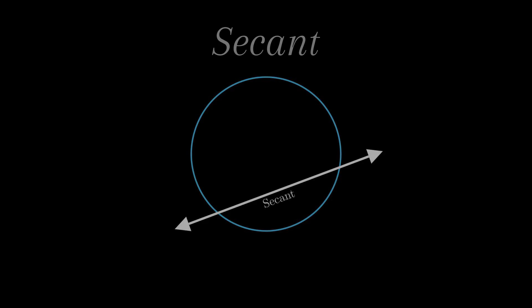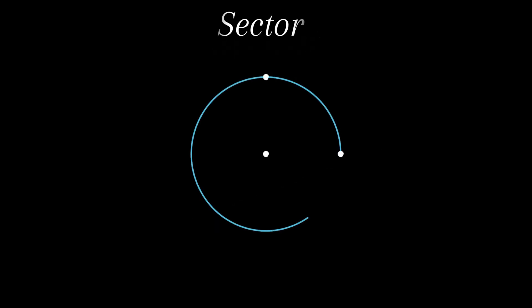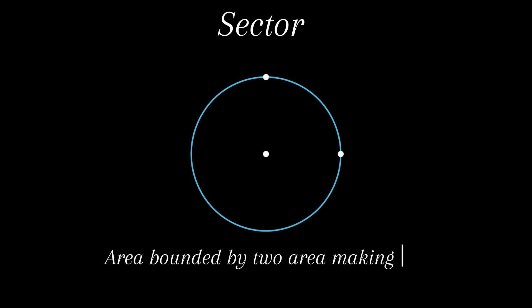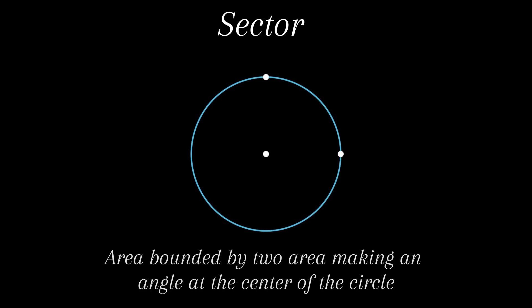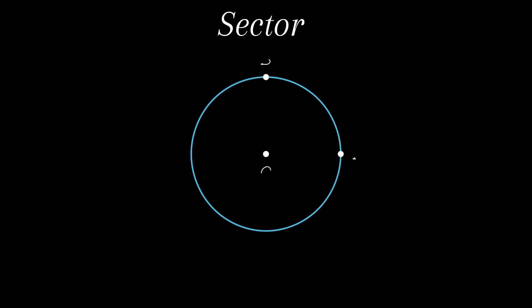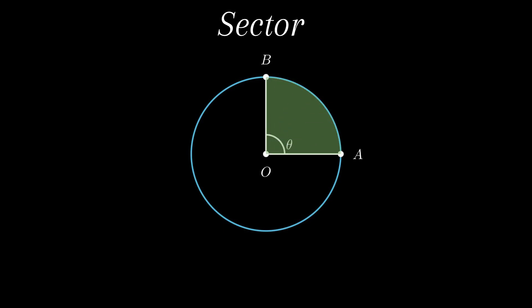The next part of the circle is called a sector, defined as the area bounded by two radii making an angle at the center of the circle. Consider a circle with center O. Let A and B be points on the circumference of the circle. Now join OA and OB making some angle θ at the center. This closed area OABO is known as the sector.